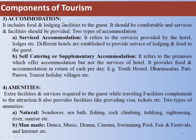The third component is Accommodation — not just reaching a place but also staying there. It includes food and lodging facilities for guests, which should be comfortable with required services. There are two types: serviced accommodation, which includes hotels like five-star and seven-star hotels where services are provided; and self-catering or supplementary accommodation, which offers premises to stay but not hotel services.